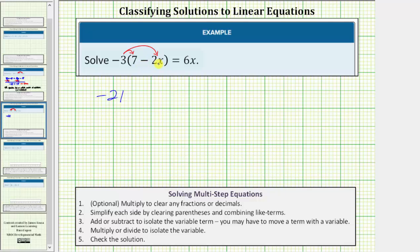Minus negative 6x is the same as plus positive 6x. So the left side simplifies to negative 21 plus 6x. On the right side we have just 6x. The next step we add or subtract to isolate the variable term. Notice how we have variable terms on both sides of the equation.